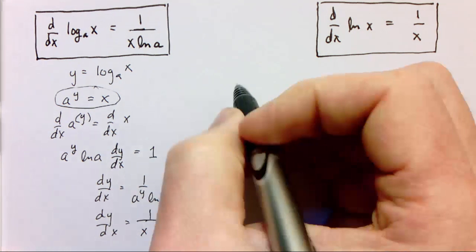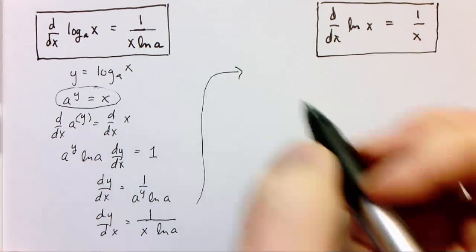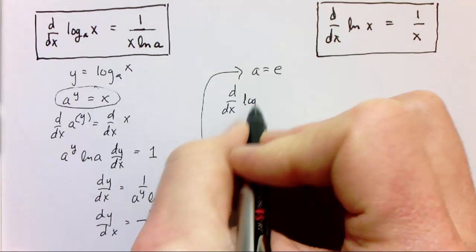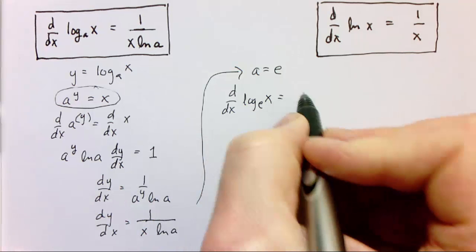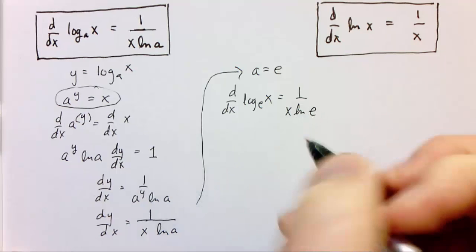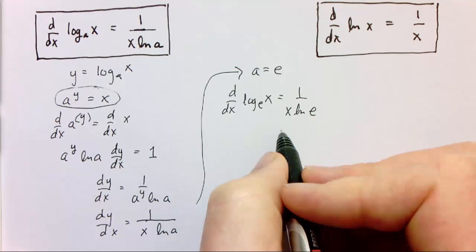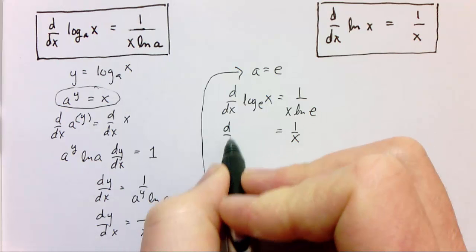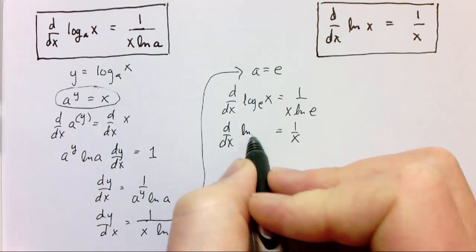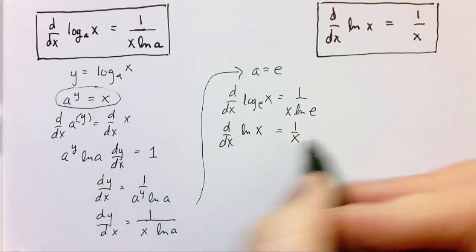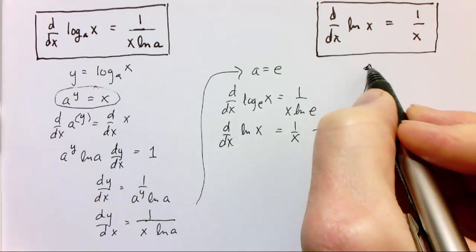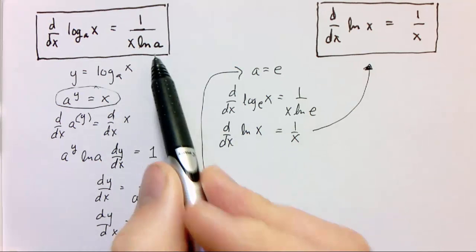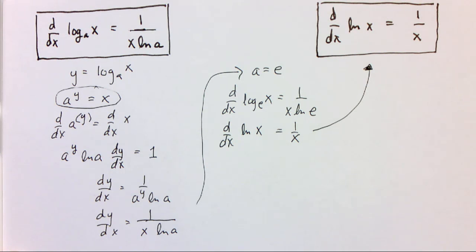What happens when we're working in the natural base? When a equals e, we have the derivative of log base e of x, which is 1 over x times the natural log of e. Natural log of e is just 1, so this simplifies to 1 over x. We normally write log base e of x as ln(x), the natural log of x. That's why base e is special — it doesn't require any adjustment; we don't need that extra term, natural log of a, floating along.